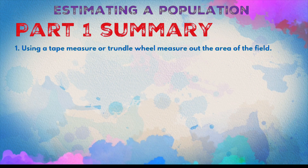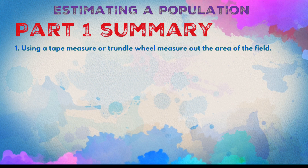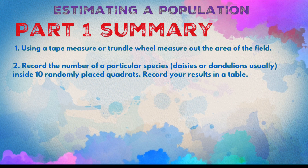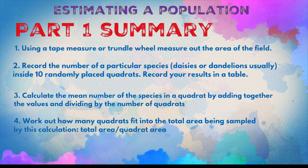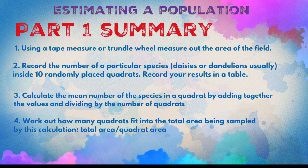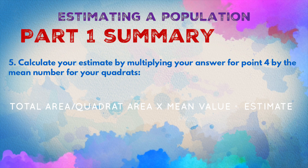To summarize estimating the number in a population: first, measure out the area of the field you're sampling. Second, record the number of the particular species inside at least 10 randomly placed quadrats and record your results in a table. Third, work out the mean number of the species in the quadrat by adding each quadrat's count together and dividing by how many quadrats there are. Step four, work out how many quadrats fit into the area using total area divided by quadrat area. Step five, multiply that by the mean value in each quadrat to get the estimate.